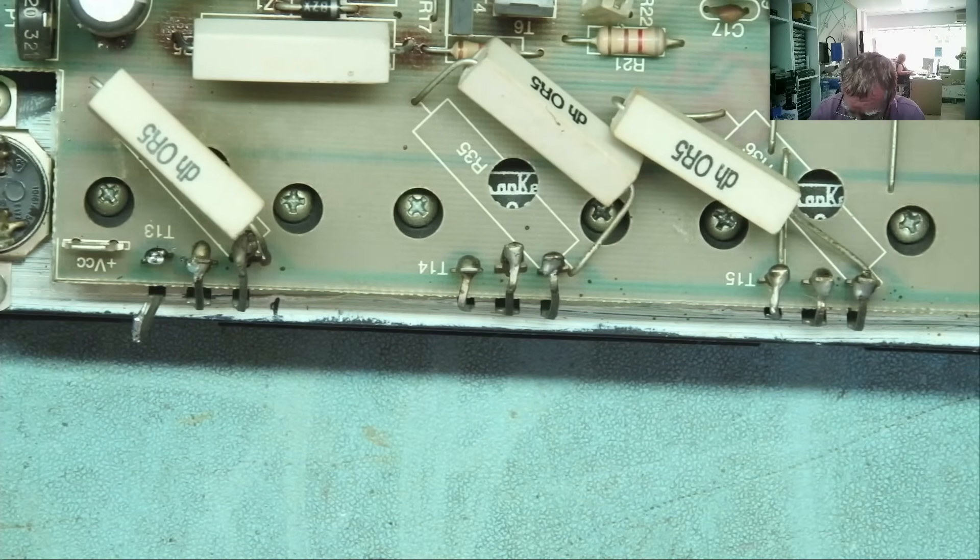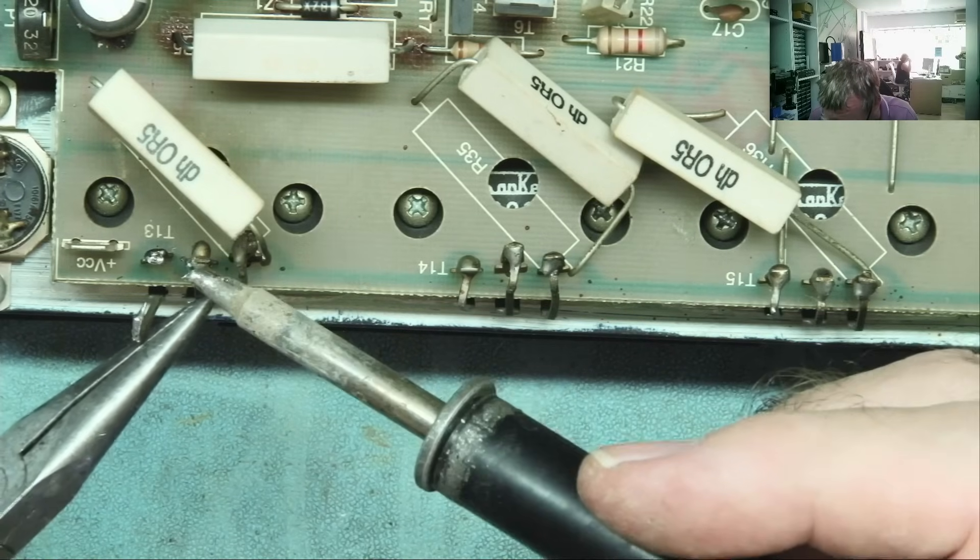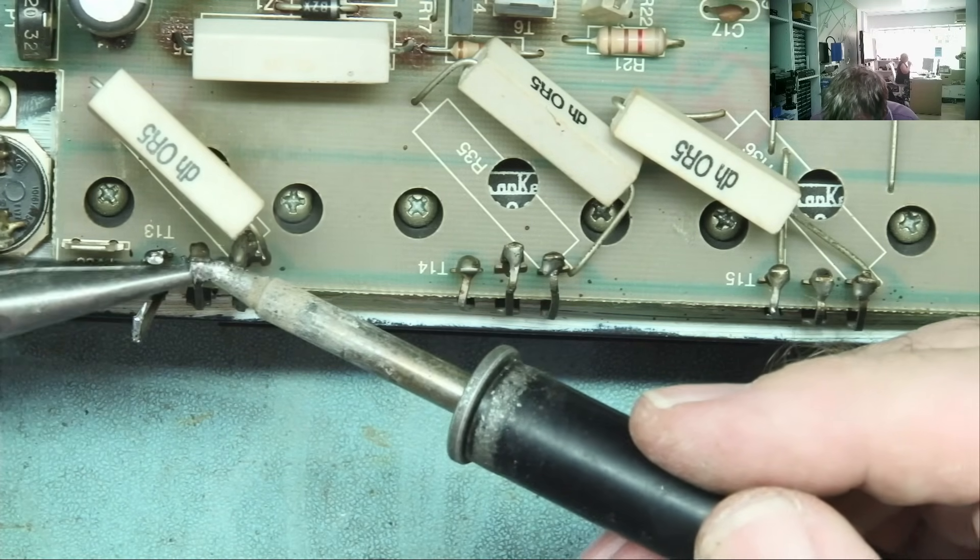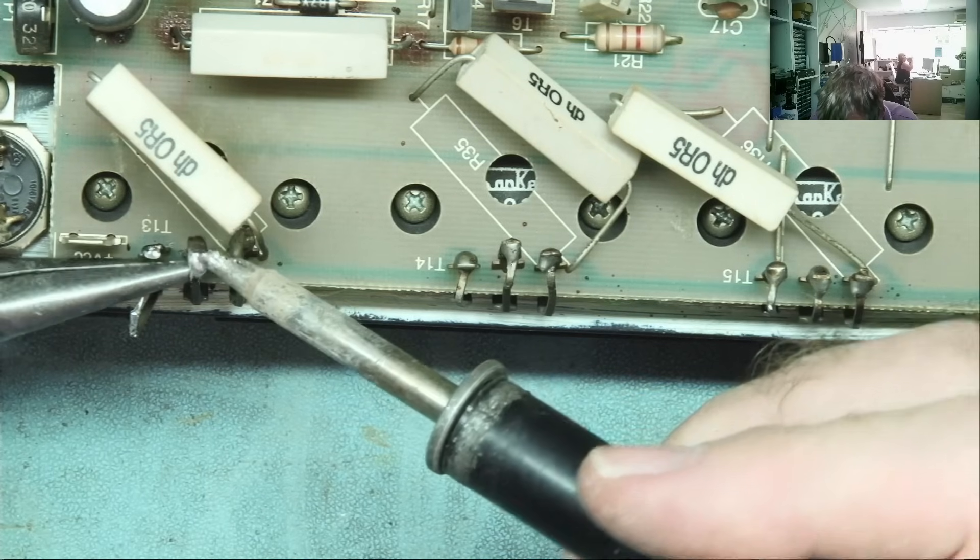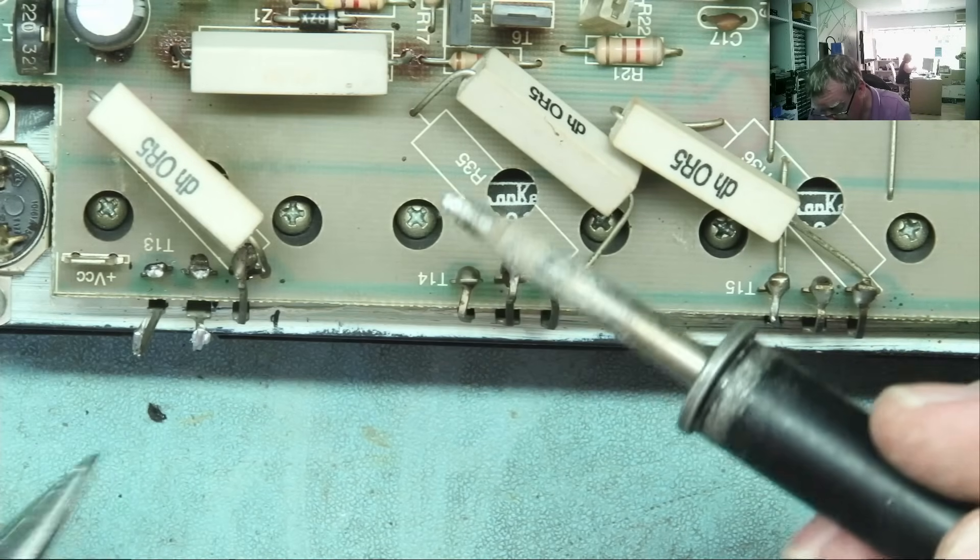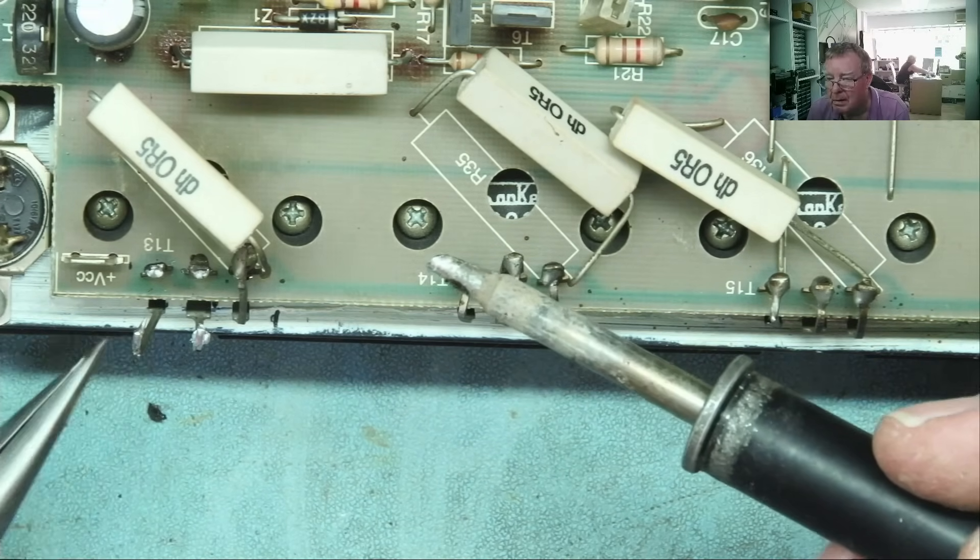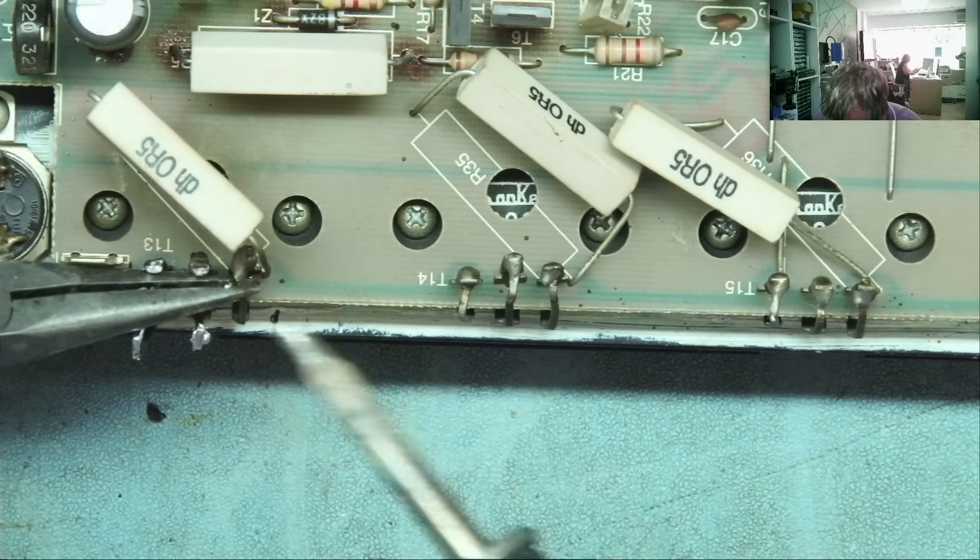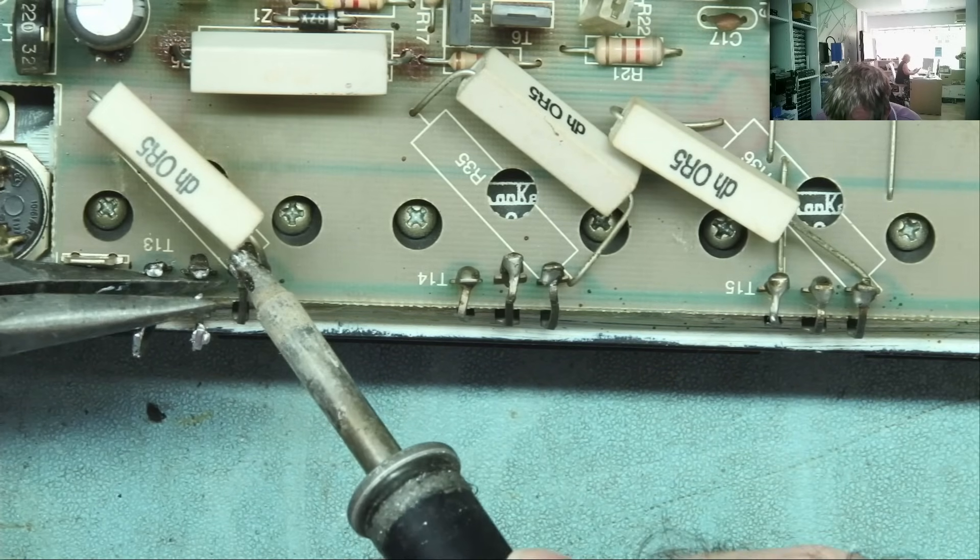I'm not sure how much holding the bottom of that thing down helped to make sure it stayed in the board, to be honest. Out it comes. Bit of plastic came off - is that a broken housing on this transistor, if it is a transistor? I'm sure we will find out.